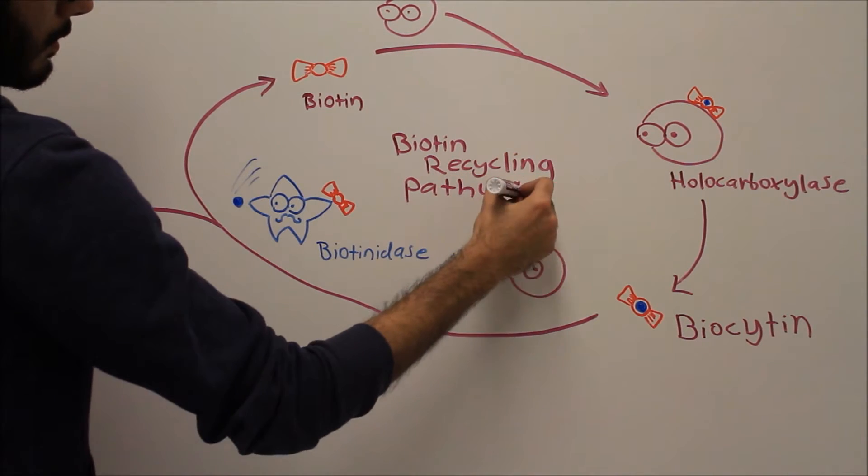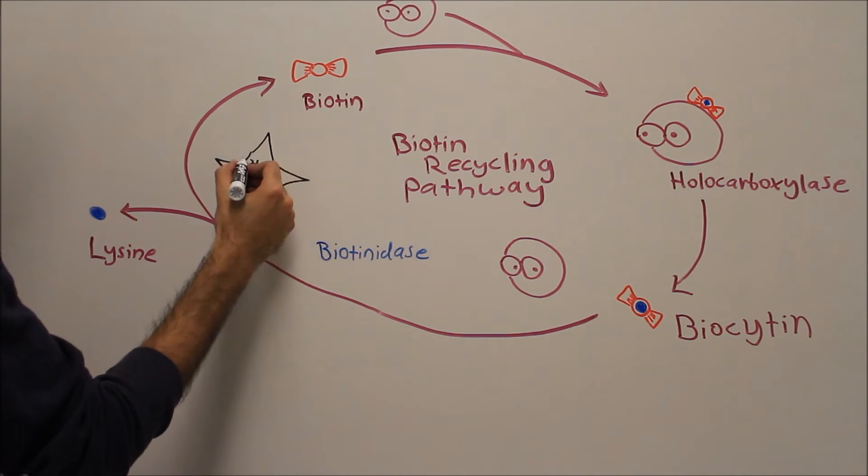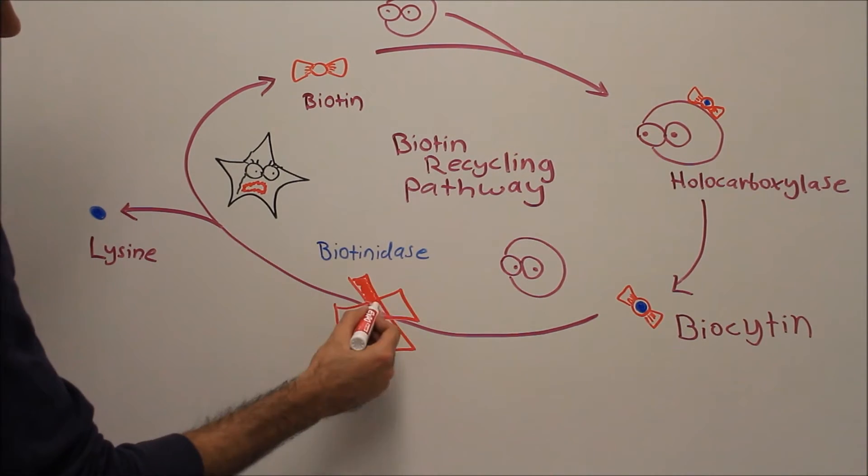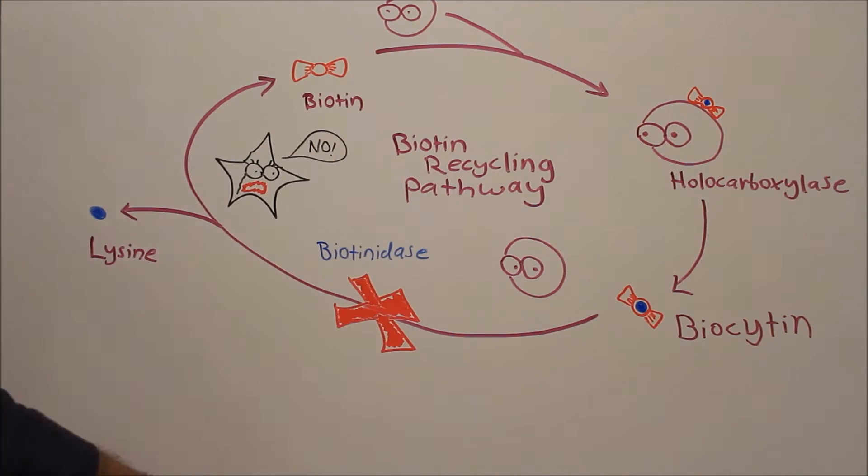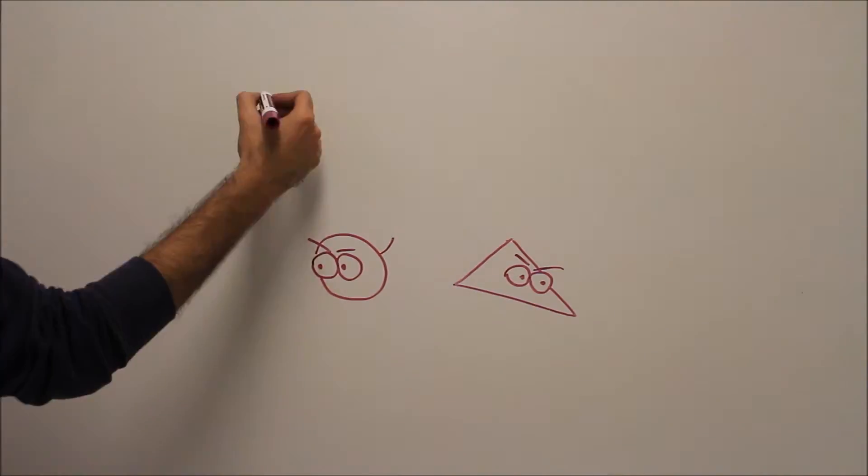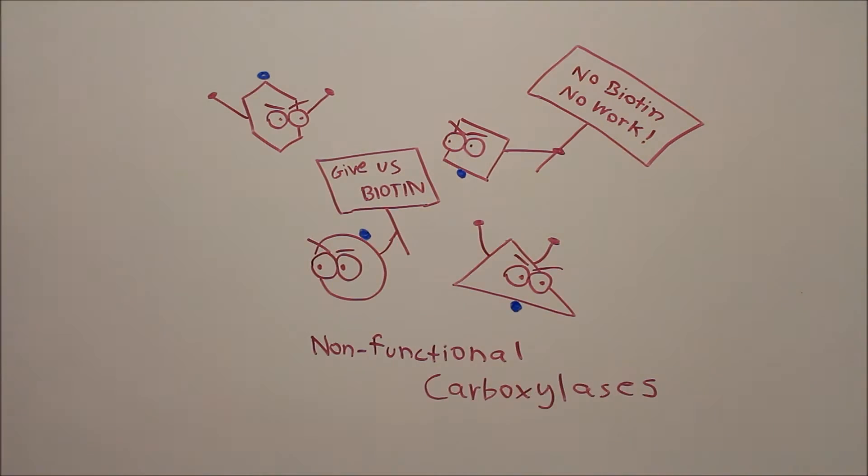Of course, this is what happens in people with normal metabolism. In those with multiple carboxylase deficiency, the biotinidase enzyme is mutated and cannot efficiently perform its function. As a result, there is an accumulation of biocytin and a lack of free biotin. Therefore, all the carboxylase pathways dependent on biotin activation will become dysfunctional.